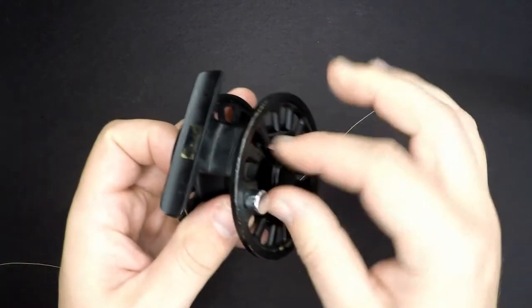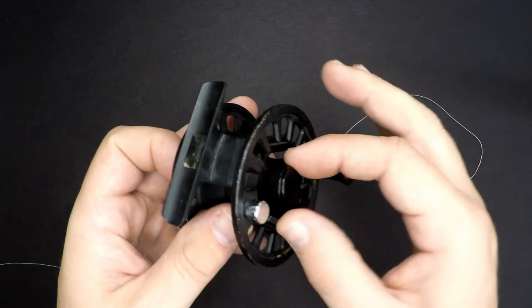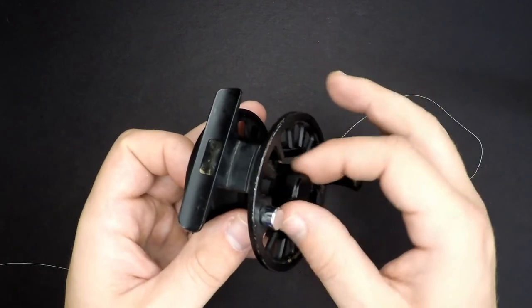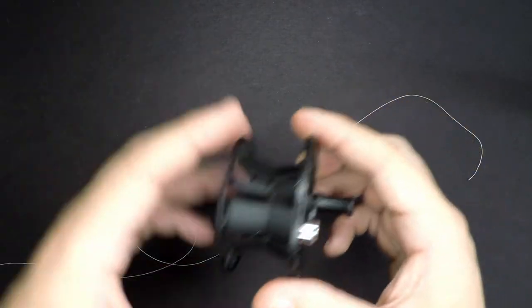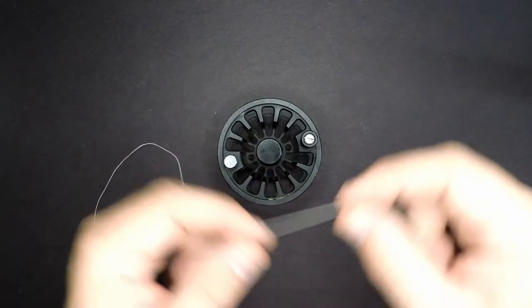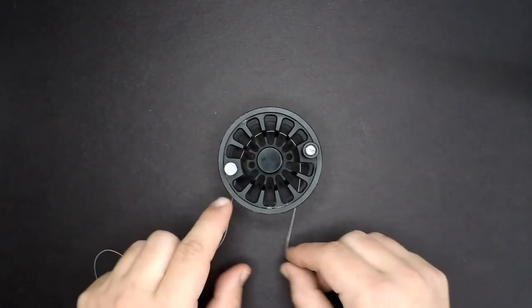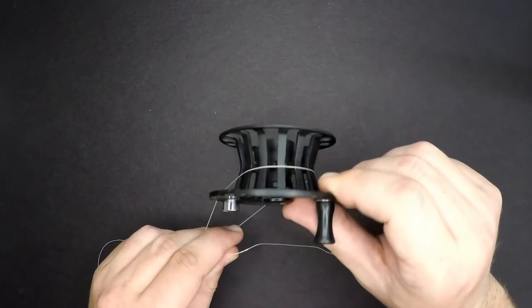All right, so I'm going to take the spool off my two-weight fly reel here. I feel like taking the spool off I can tie this knot a lot easier if it's not on the reel. Then I'm going to take my fly line backing. I'm going to wrap it around the spool, give you a better look at it right here.